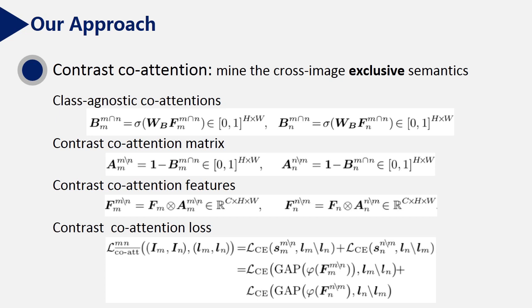After computing the co-attention, we compute the contrastive co-attention. It is used to mine the cross-image exclusive semantics. We filter out the common object regions and obtain contrastive co-attention features. Because contrastive co-attention features focus on non-common semantics, unique labels for each image are used as the supervision signal.